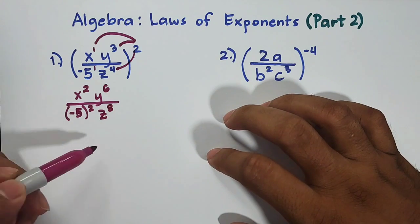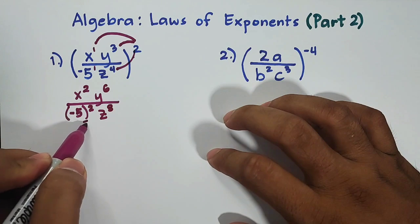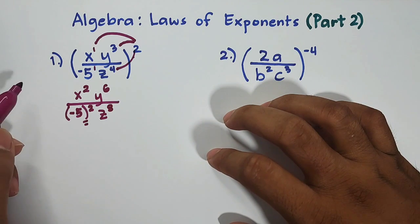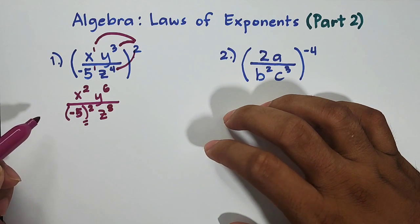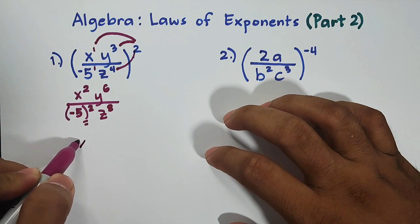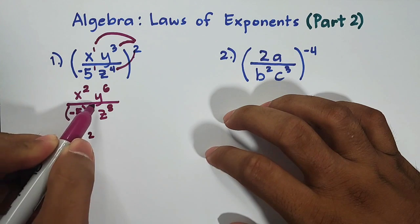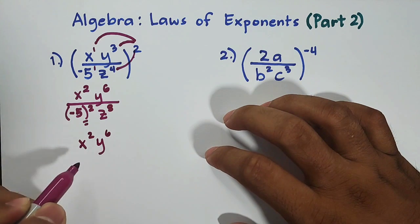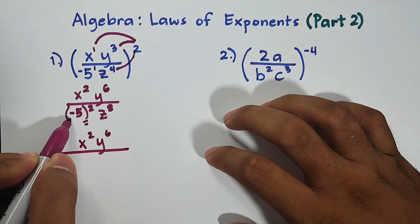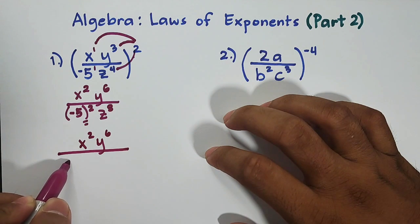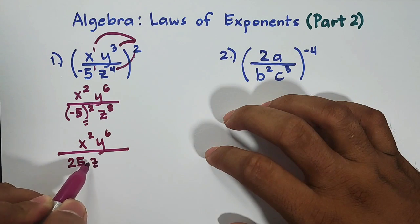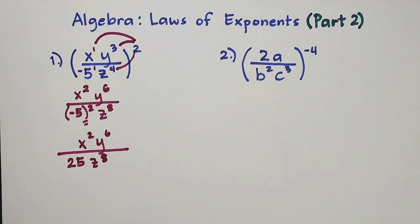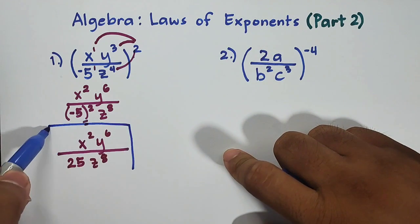So in this case, all we need to do is to get the square of negative 5. Remember, when you're multiplying two negative numbers, it will give you a positive answer. So we will copy x squared, followed by y raised to 6, over negative 5 squared is 25, z raised to 8. And this is now the answer for item number 1.